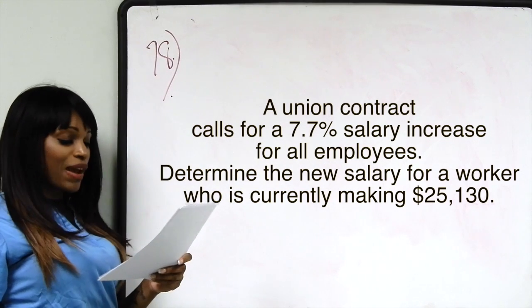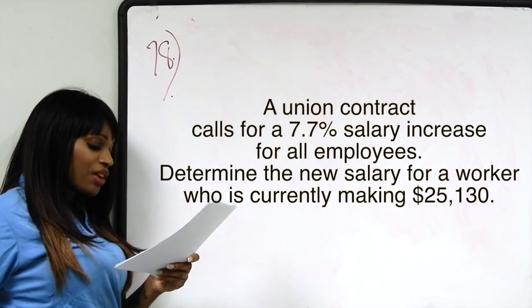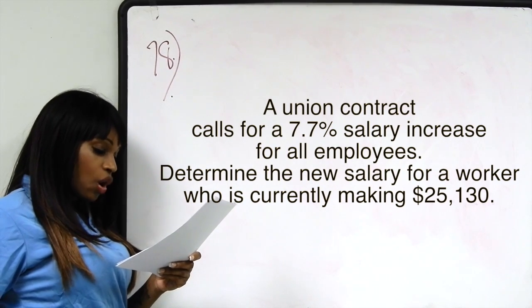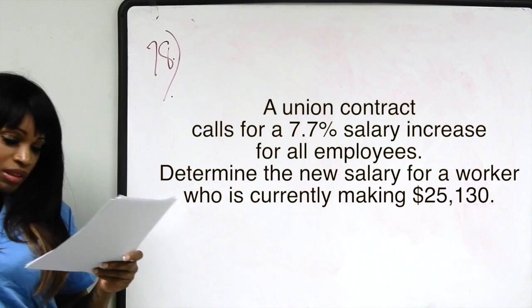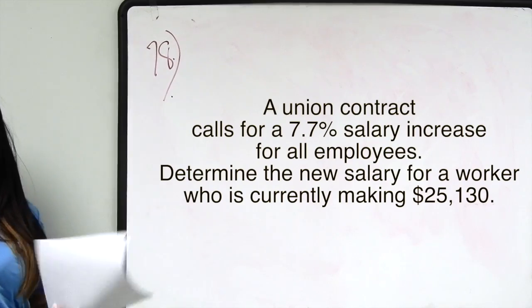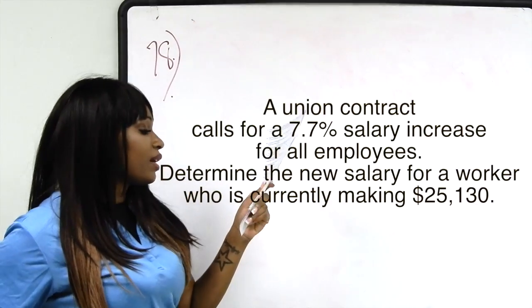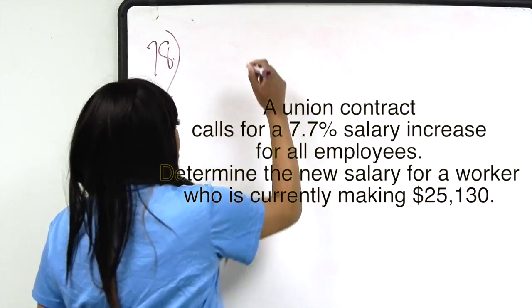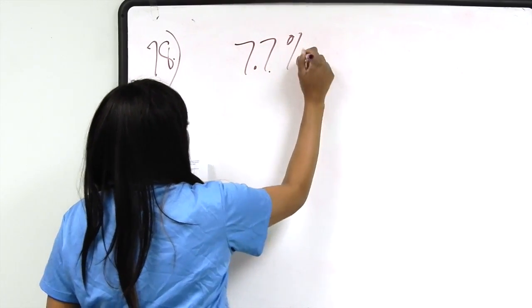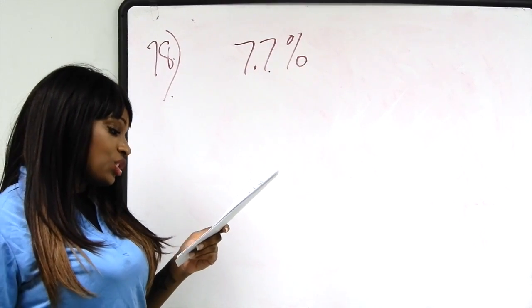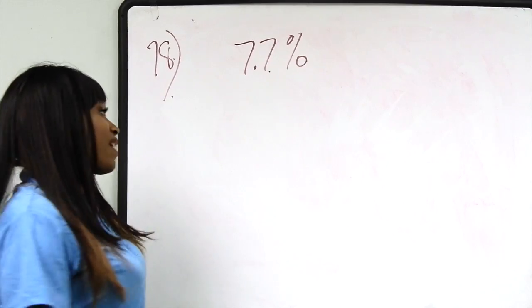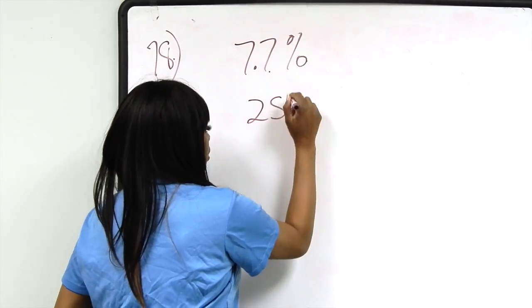Number 78 on the MATLA-6 final review. A union contract calls for a 7.7% salary increase for all employees. Determine the new salary for a worker who's currently making $25,130. So what we know here is that they have a union contract that calls for a 7.7% salary increase and it's asking us to determine the new salary for a worker who's currently making $25,130.